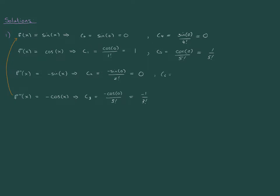I go again, c_6 is -sin(0) over 6 factorial, which is 0. c_7 is -cos(0) over 7 factorial, which is just -1 over 7 factorial. So I keep cycling through these four derivatives. The only thing that changes is the factorial on the bottom. Every single time, I'll have either sin(0), cos(0), or -sin(0), or -cos(0).